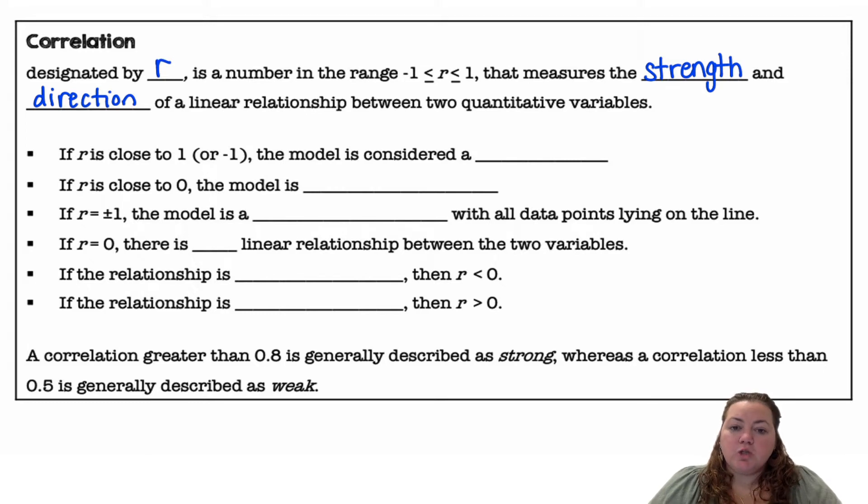If R is close to 1 or negative 1, the model is considered a good fit. If R is close to 0, the model is not a good fit.